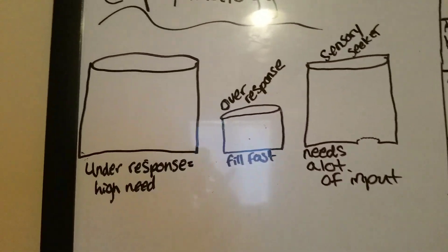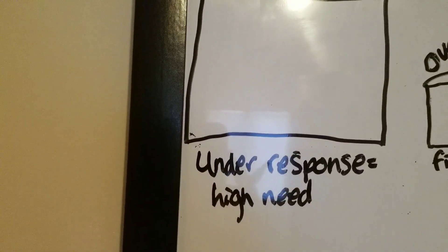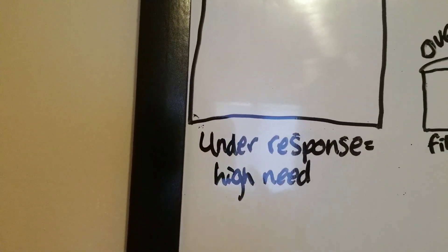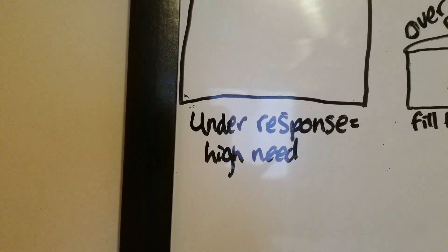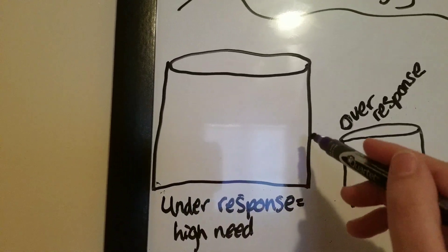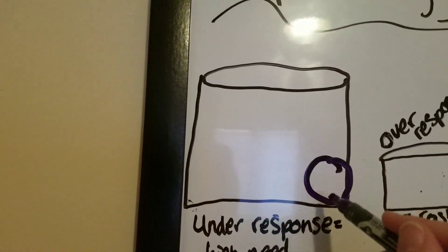The first thing that we're going to discuss is a high need, so the person is under-responsive. With an individual that's under-responsive, you are providing some input. They have input here.